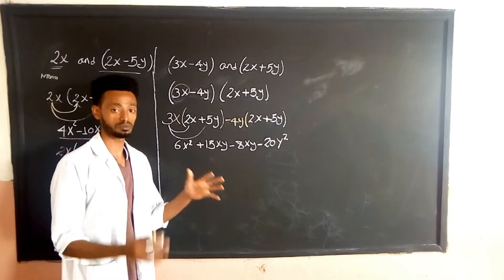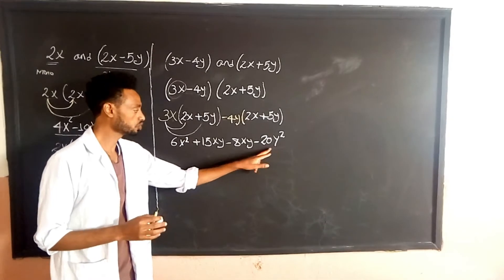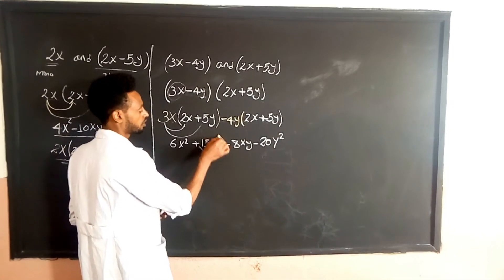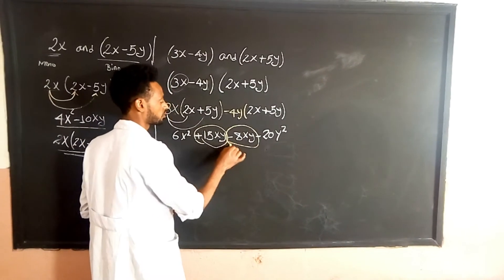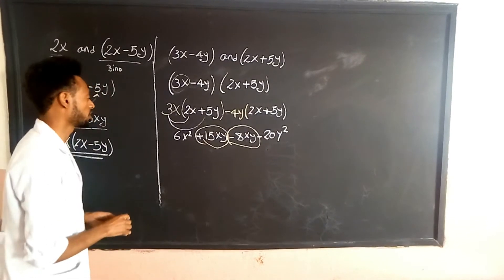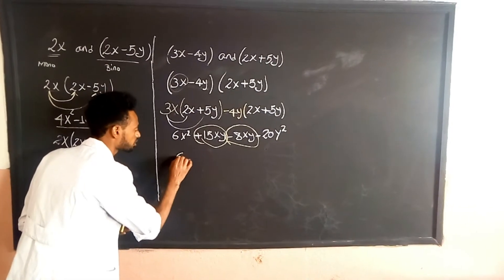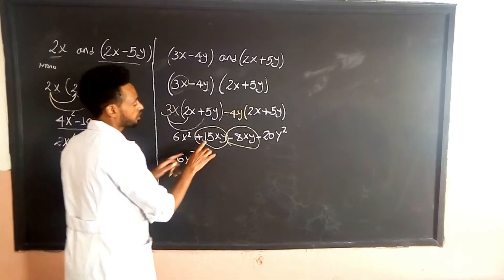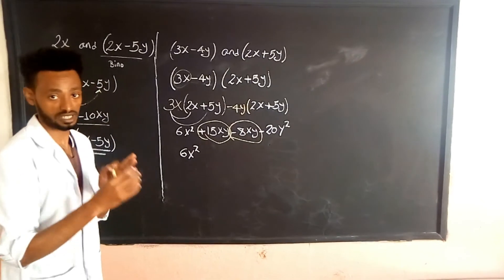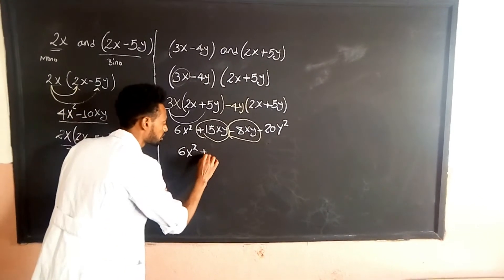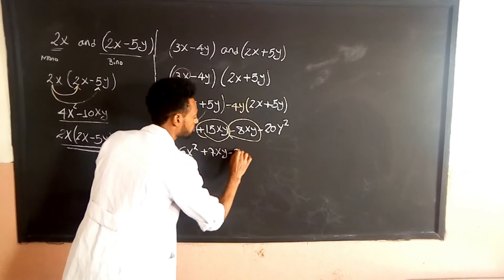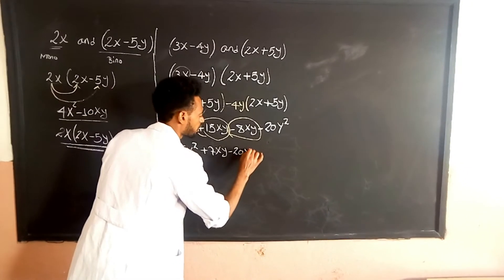Now we collect the like terms — terms with the same variables. We have 6x squared. Then 15xy minus 8xy combined gives us 7xy. And negative 20y squared. So the final answer is 6x² plus 7xy minus 20y².